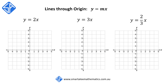The third type of lines with one intercept are lines through the origin. These lines have the equation of the form y is equal to mx. The coefficient of x, this variable m, represents the gradient of the line.